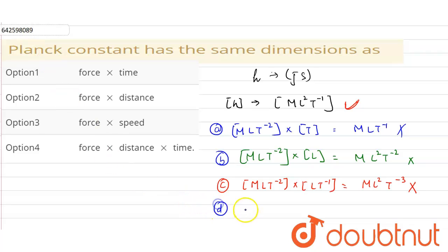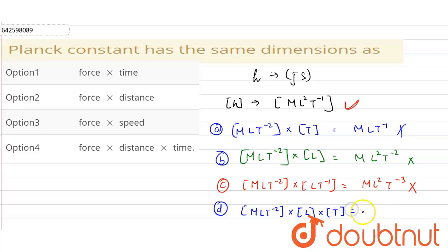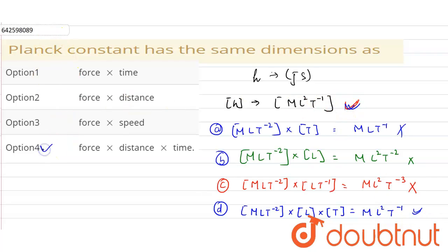Checking the fourth option: force into distance into time. Force is MLT⁻², distance is L, and time is T. Multiplying these gives ML²T⁻¹, which exactly matches the dimension of Planck's constant. Therefore, the correct option is option number 4.